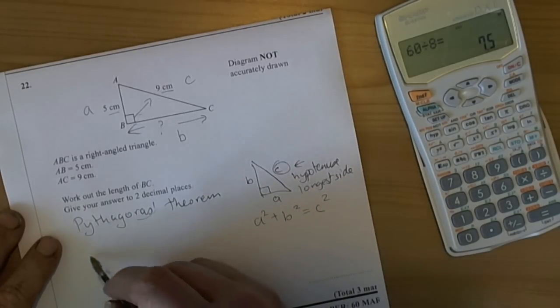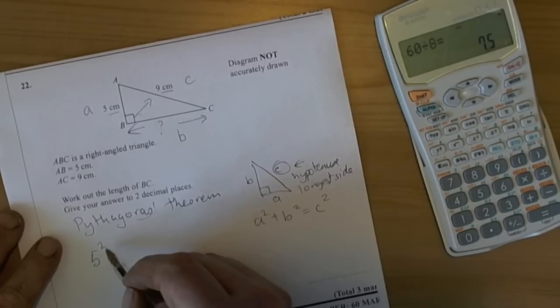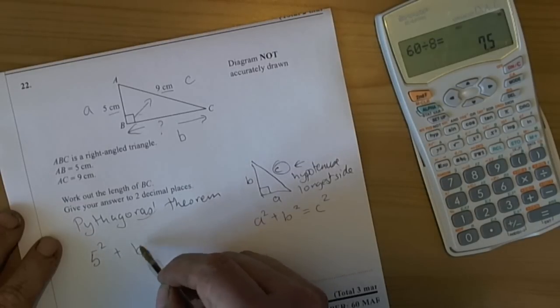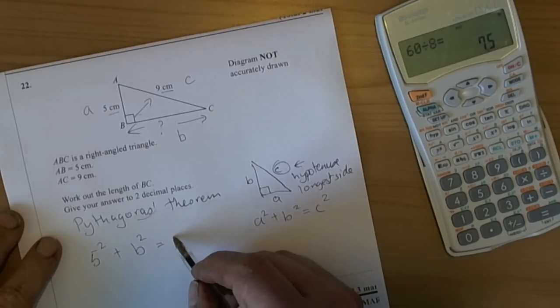So we've written out the theory, so now replace the theory with the numbers. So A we've got a value of 5, B is what we're trying to find so we can leave it as B squared, and C has got a value of 9.